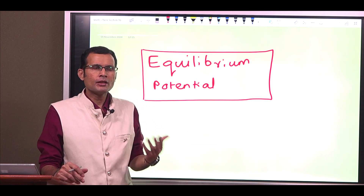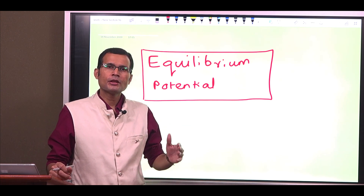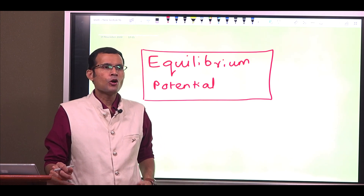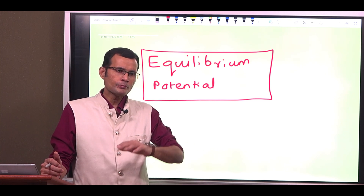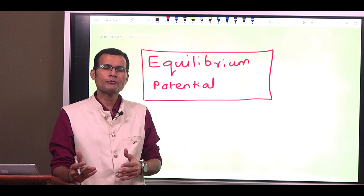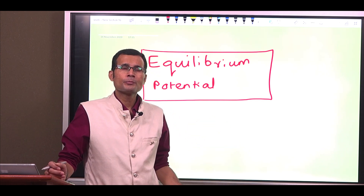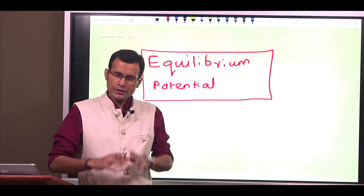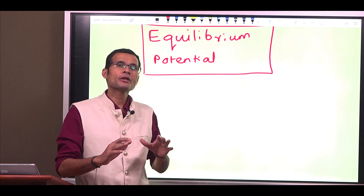Questions that students generally ask: why are the equilibrium potentials different for a nerve versus a skeletal muscle? Or why do we give a plus sign or minus sign for a particular equilibrium potential for a particular ion? For instance, equilibrium potential for sodium is plus 61 millivolts, but for potassium it is minus 96 millivolts. What decides this plus or minus sign? Let us try to understand this topic in detail.